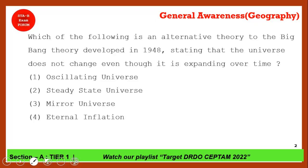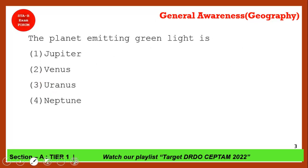Which of the following is the alternative theory to the Big Bang theory? The correct answer is the Steady State Theory, proposed in 1948. It states that the universe does not change in its overall properties even though it is expanding over time — the state stays the same as the initial state. So the correct answer is option 2, Steady State Theory.